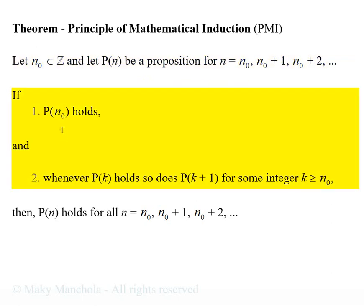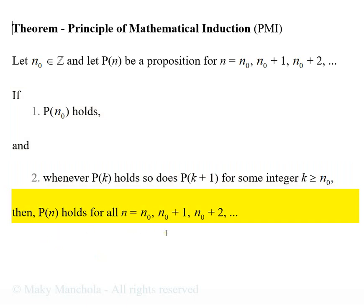If P of n0 holds, and whenever P of k holds, so does P of k plus 1 for some integer k greater or equal to n0, then P of n holds for all n equals to n0, n0 plus 1, n0 plus 2, etc.